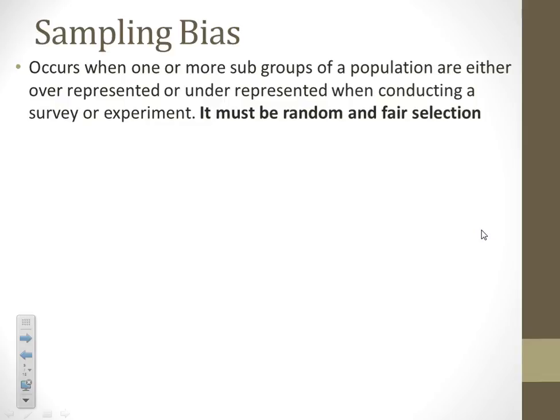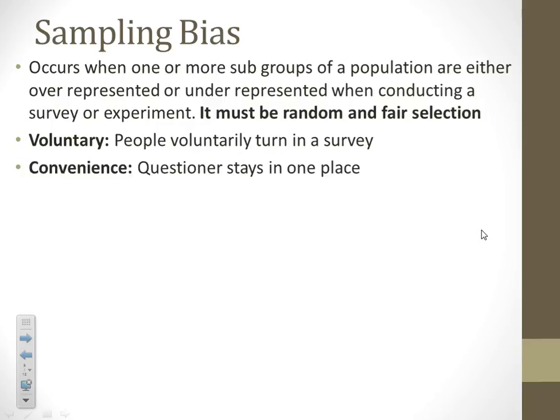We also have sampling bias, and that's when one or more subgroups of a population are either overrepresented or underrepresented. You have to have random and fair selection when you are trying to sample. Voluntary response is usually not very good — if you ask people to voluntarily turn in a survey, you're not necessarily going to get very well-distributed results.